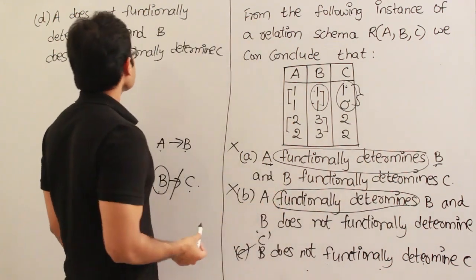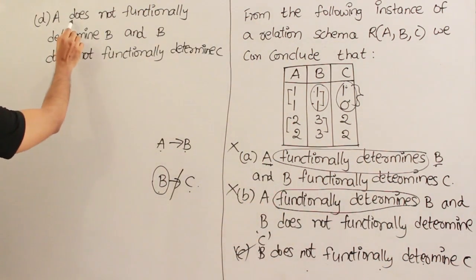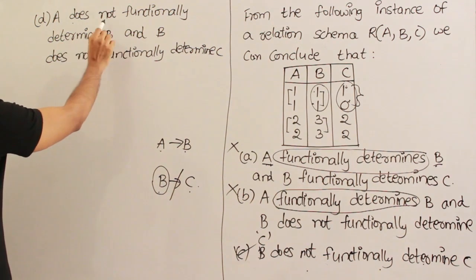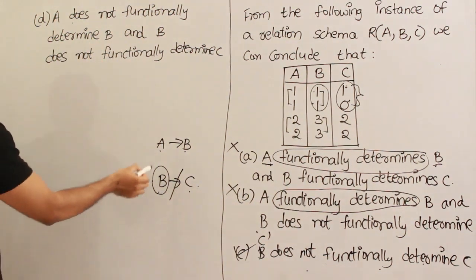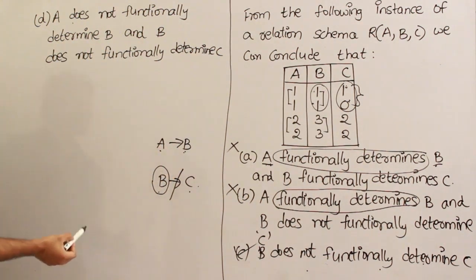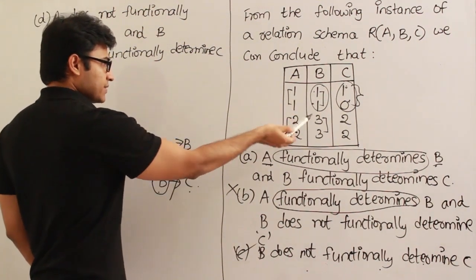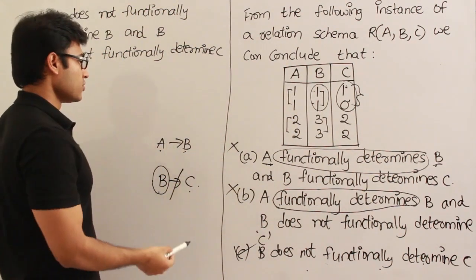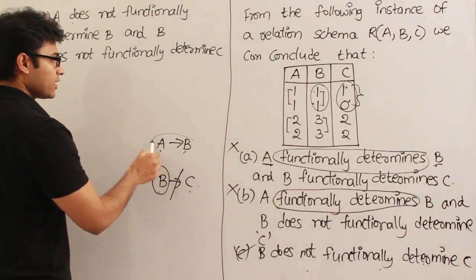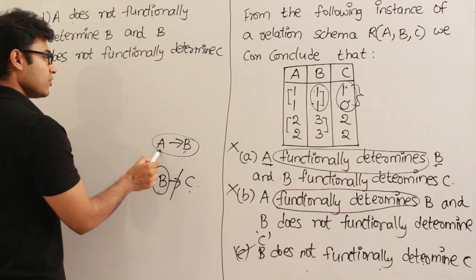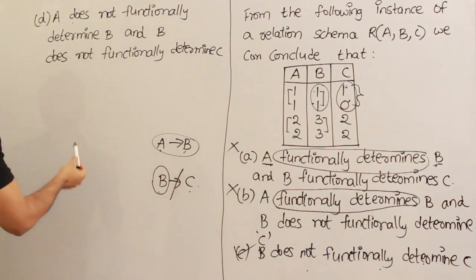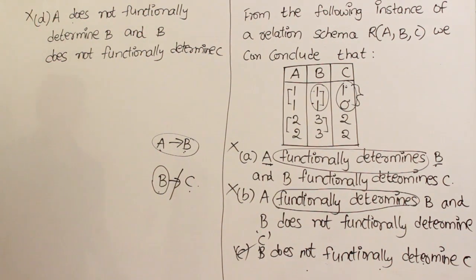This is the option. Now what about 'A does not functionally determine B'? I'm not able to rule it out because it is looking as if for this instance it is true. So from this instance I cannot derive that A does not determine B. I cannot say that.